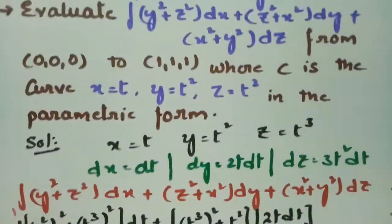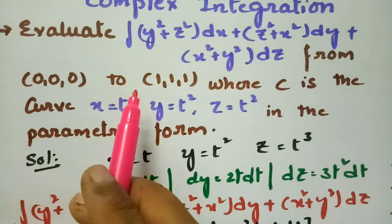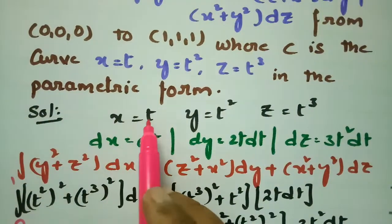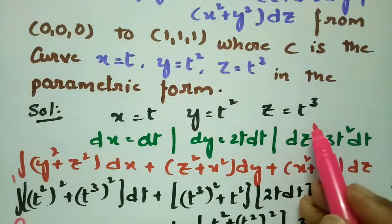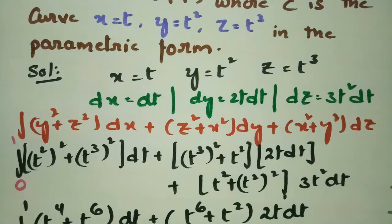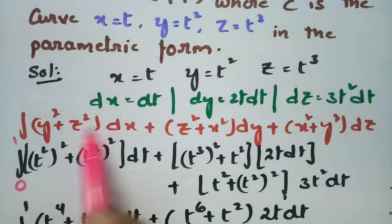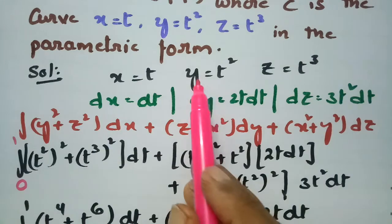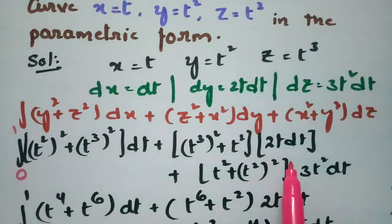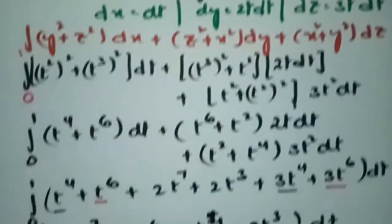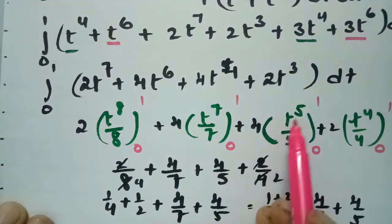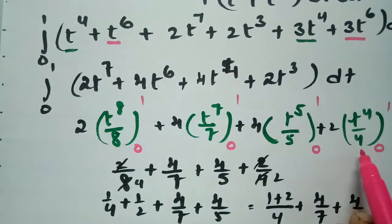Let me explain once again. We evaluated the integral from (0,0,0) to (1,1,1) where C is x=t, y=t², z=t³. With dx=dt, dy=2t·dt, dz=3t²·dt, we transform everything in terms of t. Integrating t⁷ → t⁸/8, t⁶ → t⁷/7, t⁴ → t⁵/5, and t³ → t⁴/4 between limits 0 to 1.